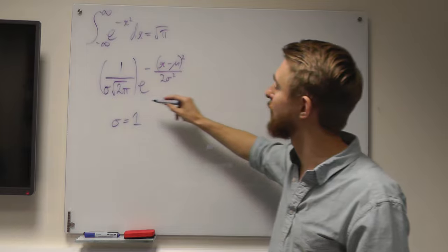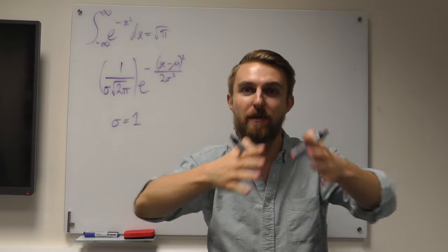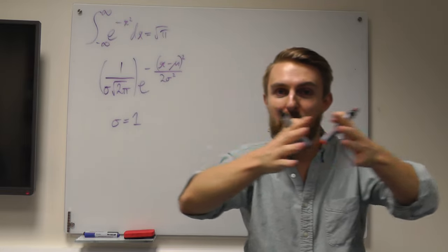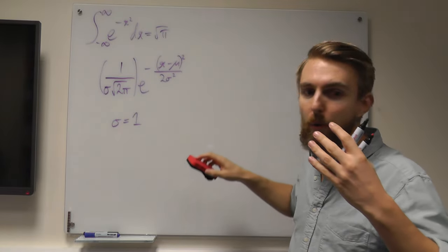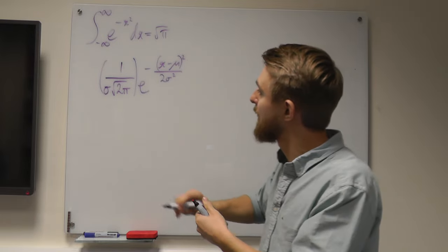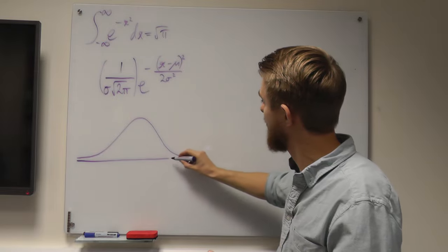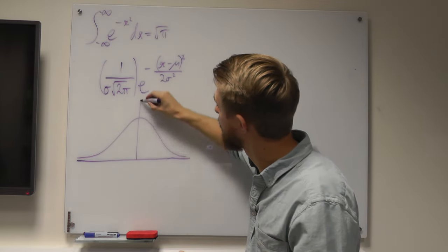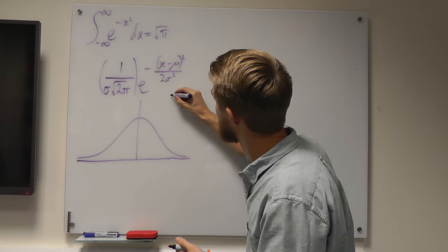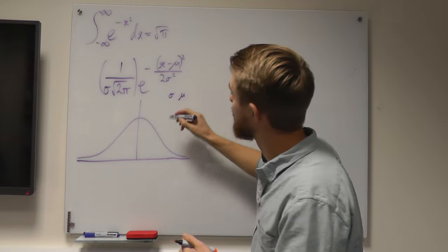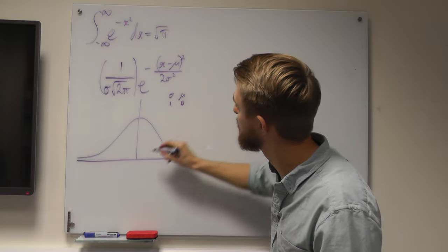This form of the normal distribution allows us to manipulate the curve in two ways: we can make it fatter or thinner, and we can translate it along the x-axis using the value of mu. When we've got the function, it still looks like the bell curve we saw before. The purple curve — what we call the standard normal — has sigma equals 1 and mu equals 0.